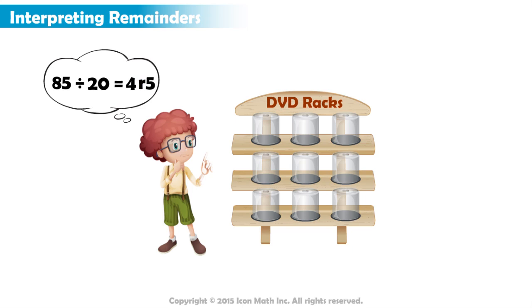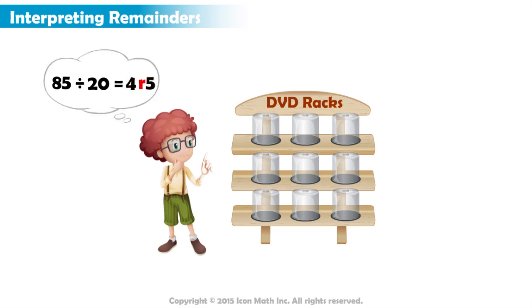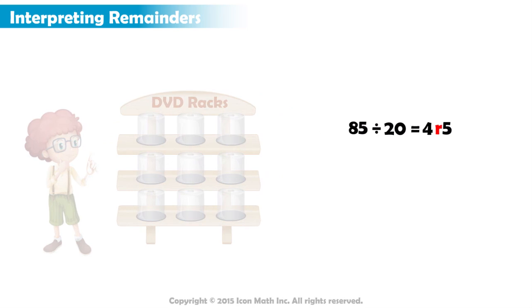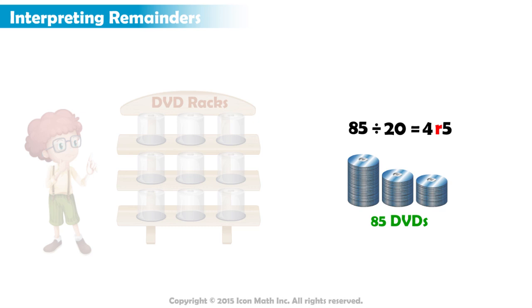Now Alex must interpret the quotient and the remainder. Dividing 85 by 20, Alex took 85 DVDs and split them into equal groups of 20.